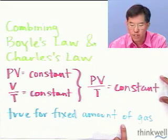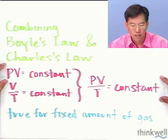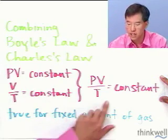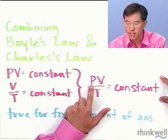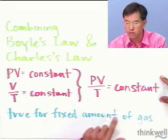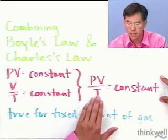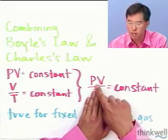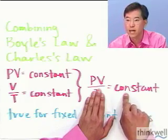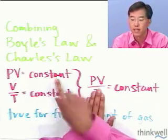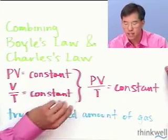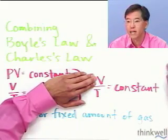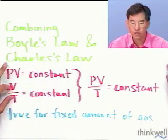Let's first show that we can recover Boyle's Law and Charles's Law from this expression. We have P times V over T is equal to a constant. At constant temperature, we have P times V equal to a constant — that's Boyle's Law. And at constant pressure, we have V over T equal to a constant — that's Charles's Law.